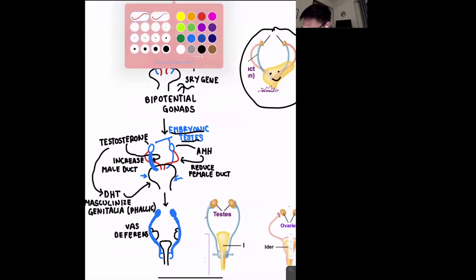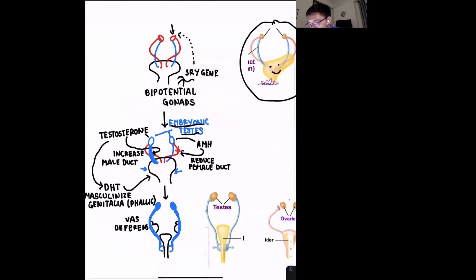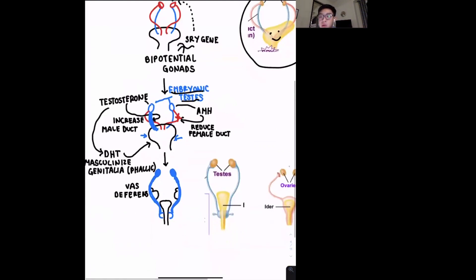Remember that bipotential gonads have both male and female tubes, but we need to use a hormone to reduce the tubes for the sex that we're not becoming. So in this case, we're turning into a male, so we have to reduce the female tubes. And then after all of this development, we are going to get to the fully developed testes as you can see here. The fully developed male tubes are what we call the vas deferens, and then we have a mature set of testes right here.